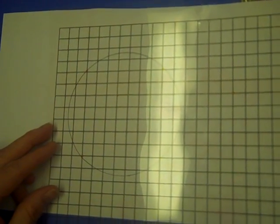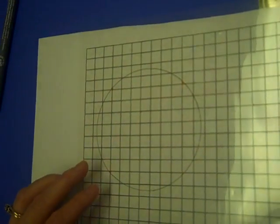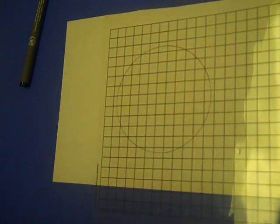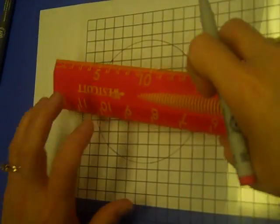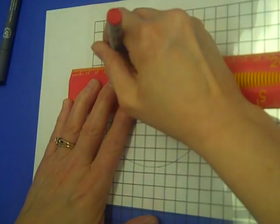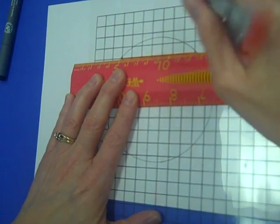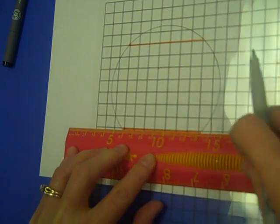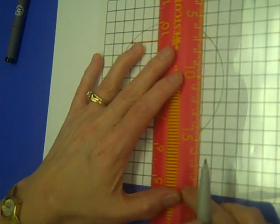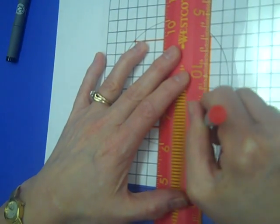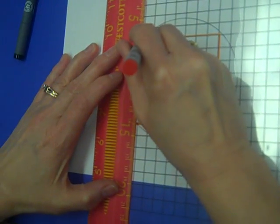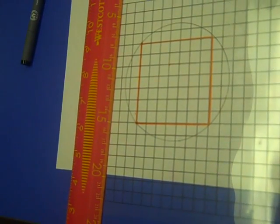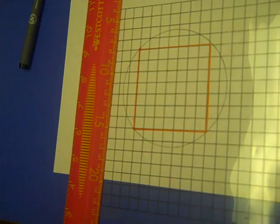Now if we go back to Archimedes, we could find, if I could find an inside square, and then an outside square.